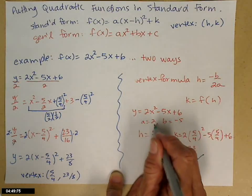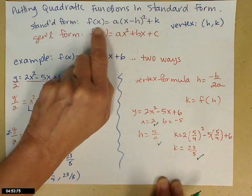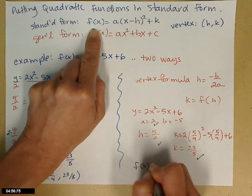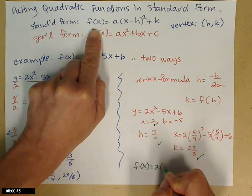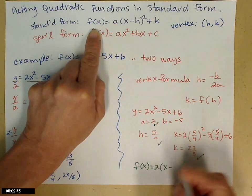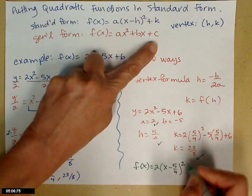If I look at my standard form, those are my unknowns to fill in. I'm ready to write it down. f of x equals a, being played by 2, times x minus h, being played by 5 over 4, squared plus k.